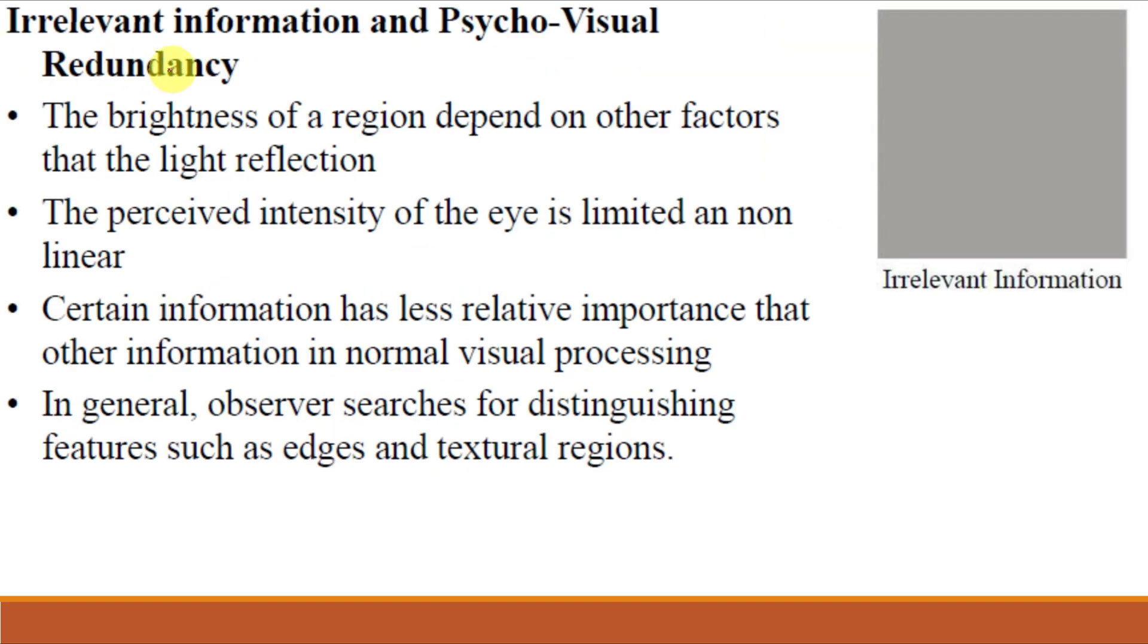Next is irrelevant information and psycho-visual redundancy, which is the result of different human visual perception. The brightness of a region as perceived by the eye depends on factors other than simply the light reflected by the region. For example, intensity variations or Mach bands can be perceived in an area of constant intensity. Such phenomena result from the fact that the eye does not respond with equal sensitivity to all visual information. Certain information has less relative importance than other information in normal visual processing. This information is said to be psycho-visually redundant and can be eliminated without significantly impairing the quality of image perception. In general, observers search for distinguishing features such as edges and textural regions.